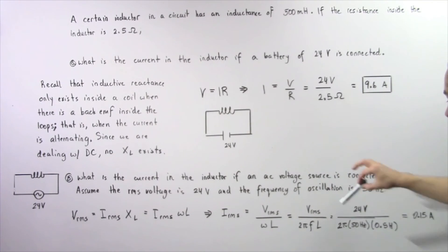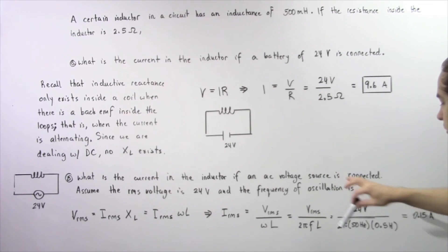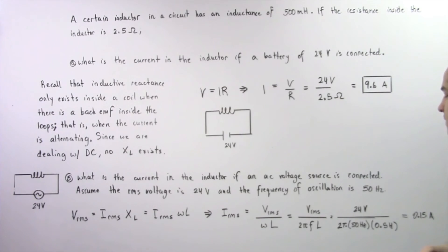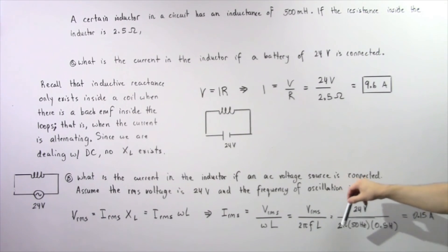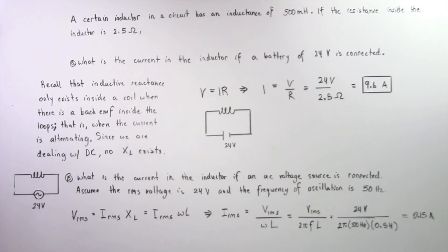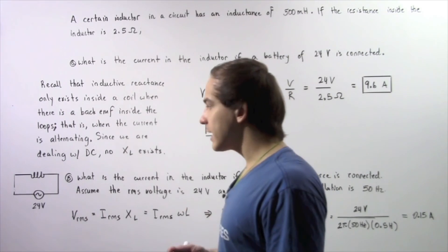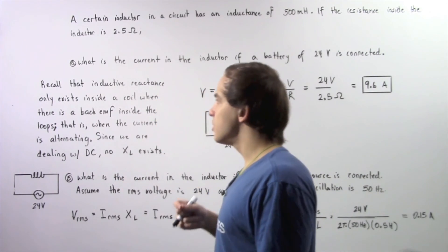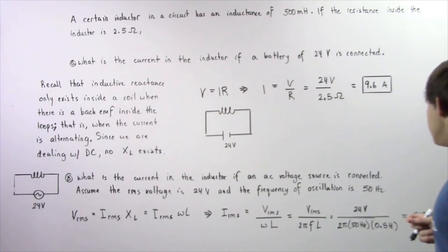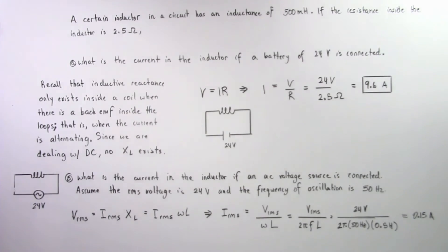Now we can plug in our values. The root mean square voltage is 24 volts, the frequency is 50 hertz, and the inductance is 0.5 henrys. So 24 volts divided by 2π times 50 hertz multiplied by 0.5 henrys gives us a current of about 0.15 amps. The root mean square electric current inside the loops of our inductor is equal to about 0.15 amps.